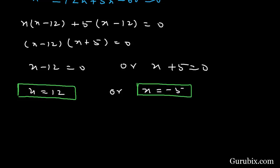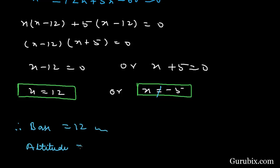Since no length can be negative, X is not equal to minus 5. Therefore, the base is 12 centimeters and the altitude is X minus 7 equals 12 minus 7 equals 5 centimeters. So this is the solution of the question. Thank you.